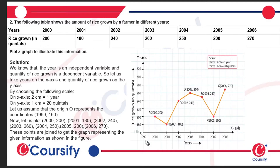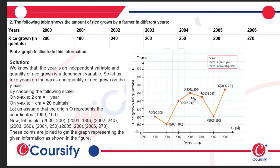The first point is (2000, 200). The second point is (2001, 180). The third point is (2002, 270). The fourth point is (2003, 260). The fifth point is (2004, 250).